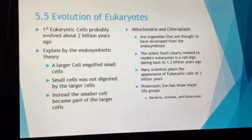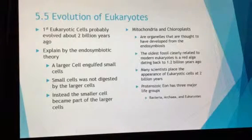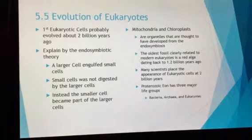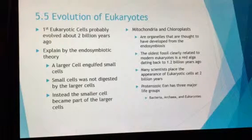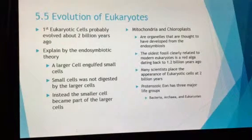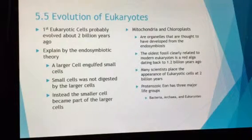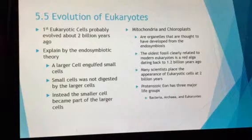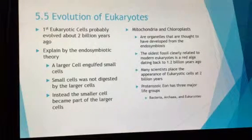We also have mitochondria and chloroplasts. Mitochondria is important because it's the powerhouse of the cell, producing our ATP. It's found in both plant and animal cells. It has its own DNA. Chloroplast is found in plant cells and some bacteria cells. Both of these organelles have their own separate DNA and they developed through the process of the endosymbiotic theory.